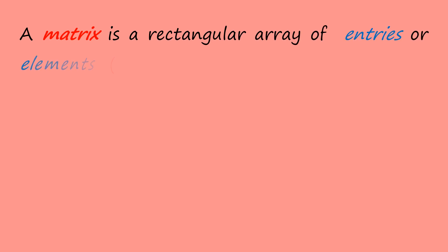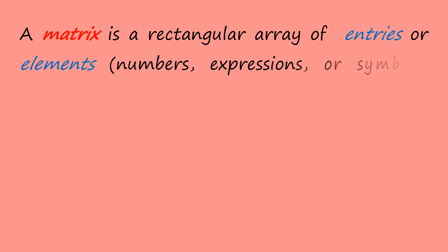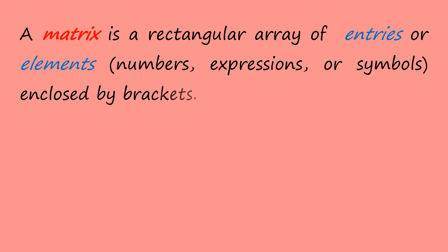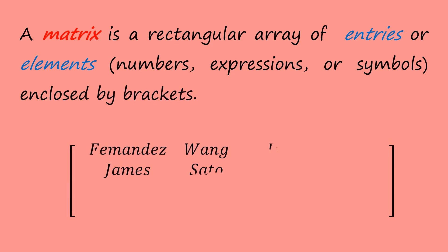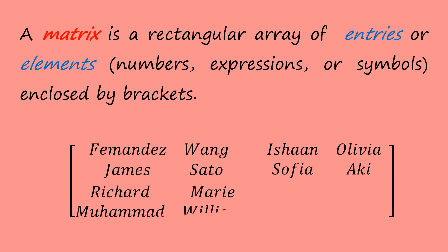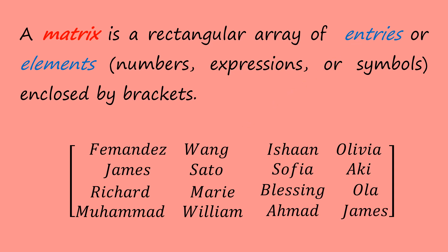A matrix is a rectangular array of entries or elements — that is, numbers, expressions, or symbols enclosed by brackets. For example, we can have lists of names in this form, and each name represents an entry or element.